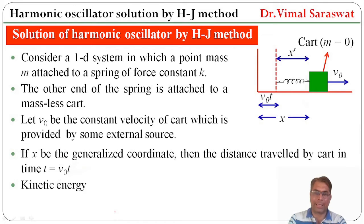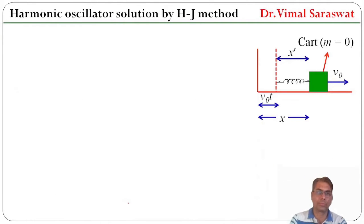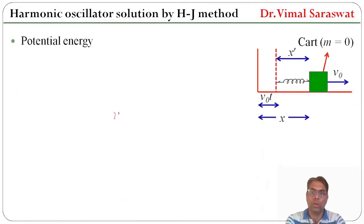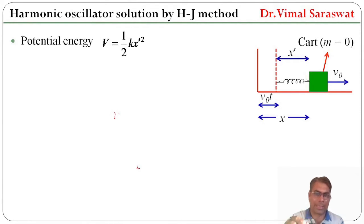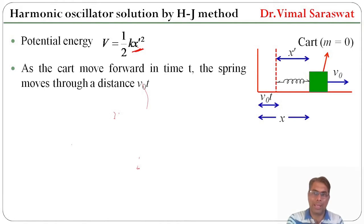The kinetic energy T equals half m v squared, where v means x dot, so T equals half m x dot squared. The potential energy V equals half k x dash squared, where x dash is the displacement due to the spring alone.